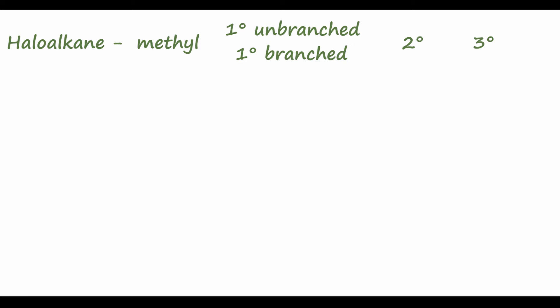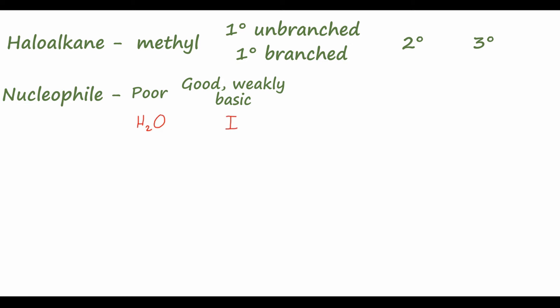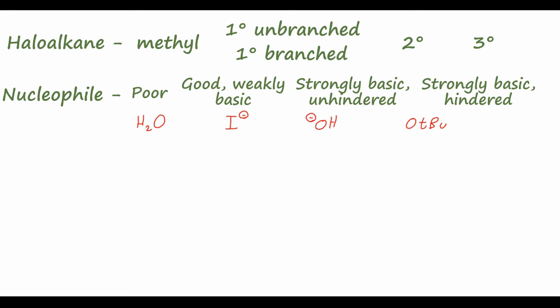The other thing we'll look at is the identity of the nucleophile, split into four categories: a poor nucleophile (water), a good nucleophile that is only weakly basic (iodide anion), a strongly basic unhindered nucleophile (hydroxide), and finally a strong and sterically hindered base (t-butoxide anion).